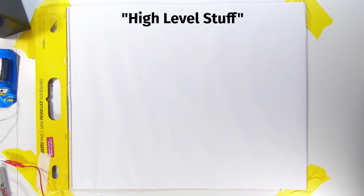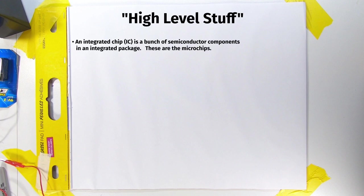Alright, now we gotta get some high-level stuff done here. An integrated chip, also called an IC, is a bunch of semiconductor components hooked together in a single package. The main CPU of a computer is possibly the most famous example of this. A CPU converts electricity into heat and a small amount of video games.